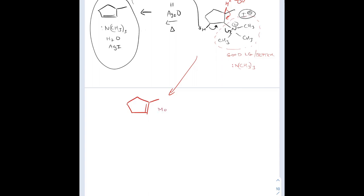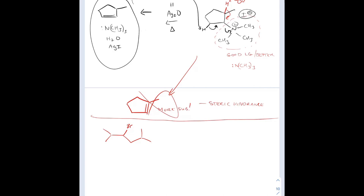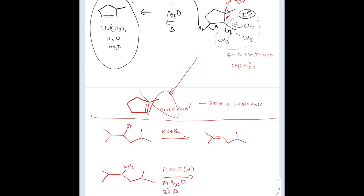Now you might think the more substituted alkene would be the product since it's more stable. However, we can't obtain that product because of steric hindrance. Think about that ammonium salt — the nitrogen has three methyl groups on there and it's huge, just knocking things away. The proton that's easily accessible is the one on the less substituted carbon. So we end up with the less substituted alkene — contrary to what we might expect. This is contrary to an E2 with potassium tert-butoxide, which gives the more substituted alkene — Hofmann elimination with methyl iodide, silver oxide, and heat gives the least substituted alkene.